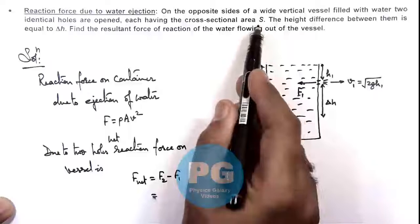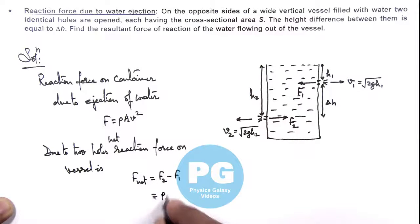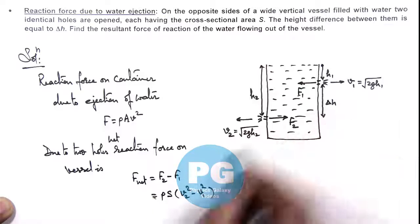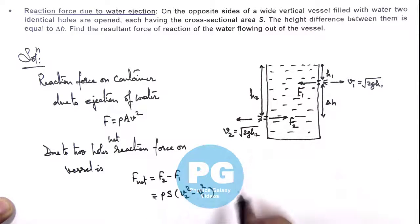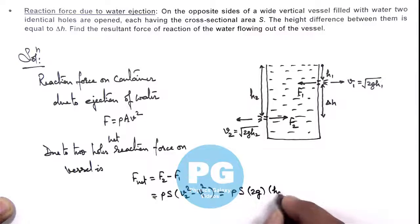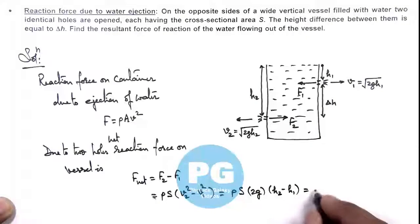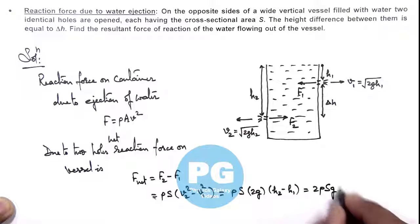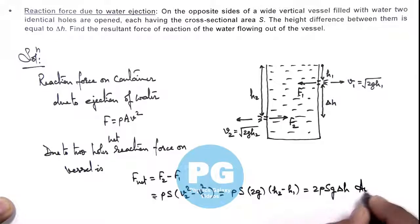If we substitute the values, area of cross section is same as s, density is same, so this is ρs, and this is v2² minus v1². If we substitute the values of efflux velocities, here it is ρs multiplied by 2g, then h2 minus h1, which we are having delta h. This will be 2ρsg delta h. That's the result of this problem.